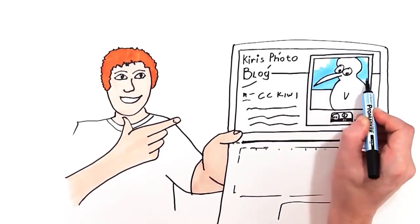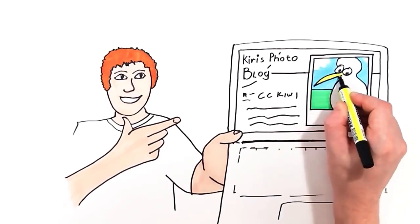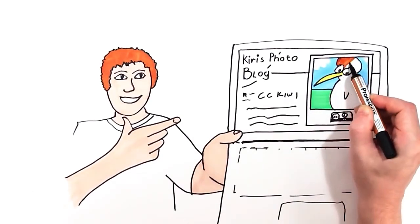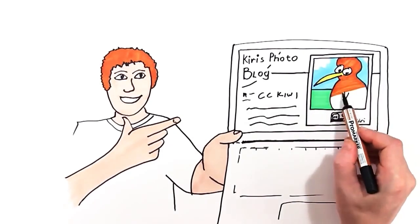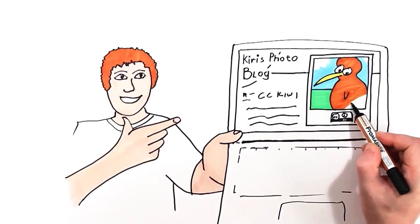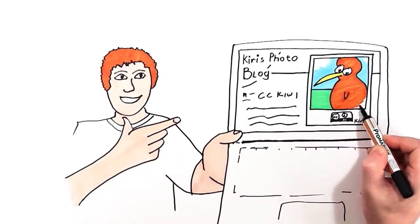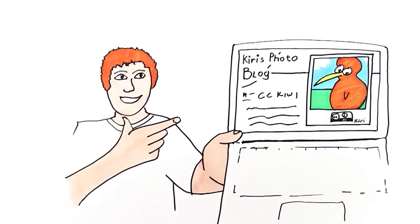Kiri's license is legally robust, but easy for Zach to understand. She's told the world, including Zach, that they can use CC Kiwi as long as they acknowledge her as the original photographer.